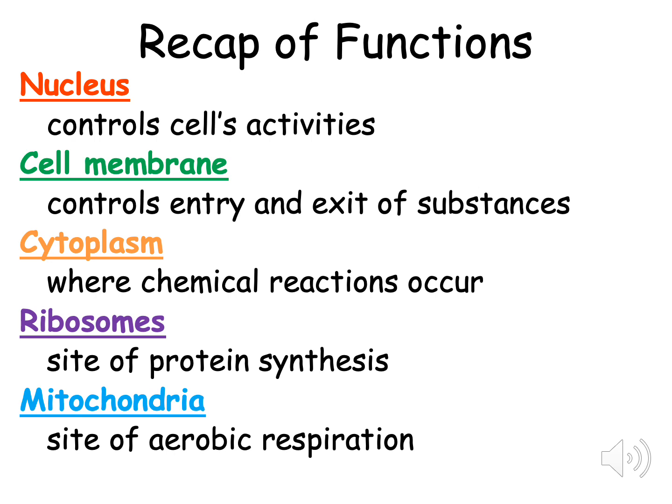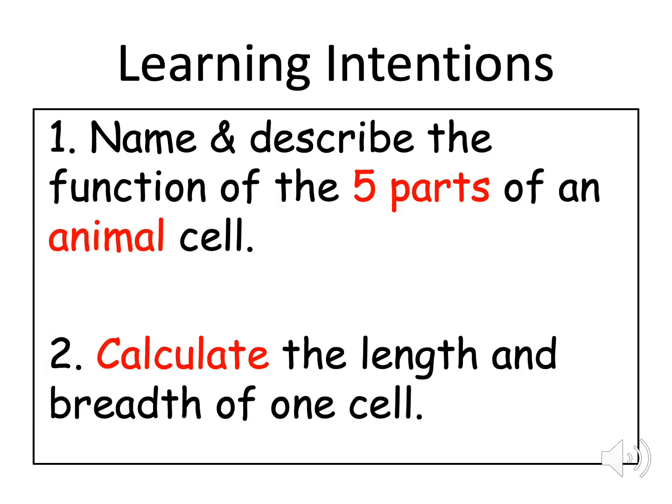So let's just take a second to recap. There are five key organelles in the animal cell. The nucleus controls all cell activity. The cell membrane controls the entry and exit of substances. The cytoplasm controls where chemical reactions occur. The ribosomes are the site of protein synthesis and the mitochondria are the site of aerobic respiration. We have looked at learning intention one to name and describe the function of the five parts of the animal cell. Now we are going to calculate the length and breadth of one cell.